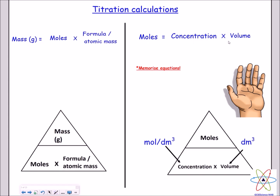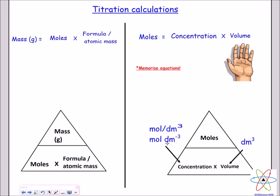The next equation you need is moles is equal to concentration multiplied by volume. Again, I've put it into a triangle formula to make it easier to use. The concentration is in units of mol/dm³, which means moles per decimetre cubed. This could also be written as mol dm⁻³ — both mean the same thing, so don't get confused.